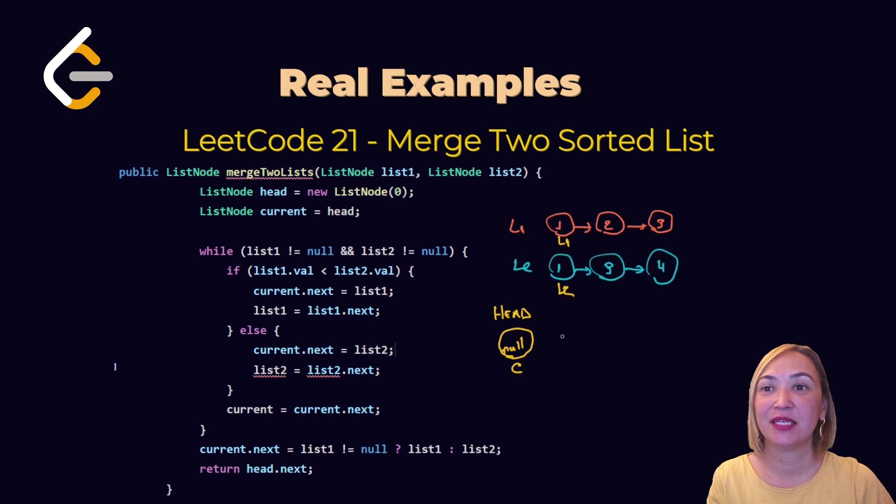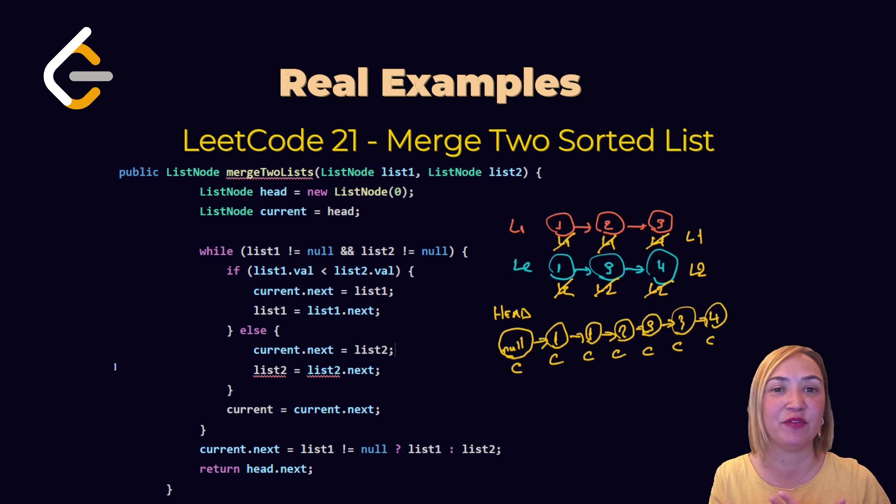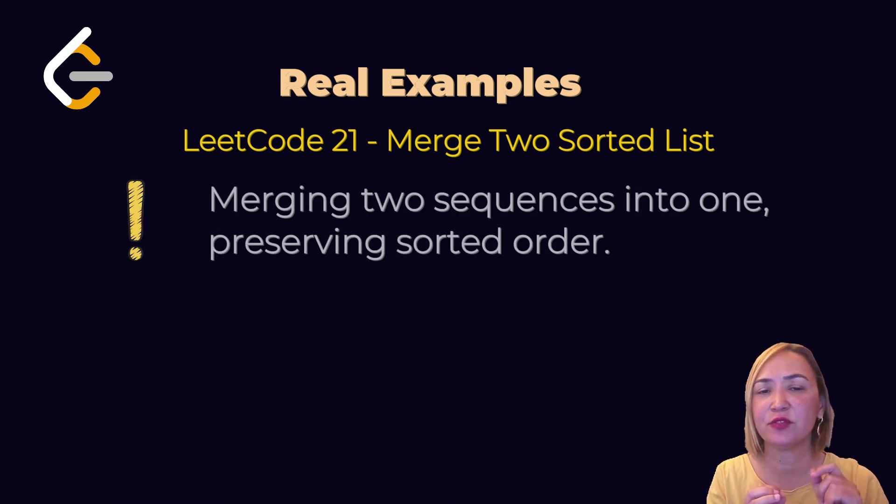Merge two sorted lists: Define a current pointer and start to check list 1 and list 2 values. If list 1 value less than list 2 value, current next will point to list 1, and move list 1 to next. Otherwise, current next will point to list 2. Move list 2 to list 2 next. Then don't forget to move current to current next. When we return head, we will find the result. Merging two sequences into one, preserving sorted order.